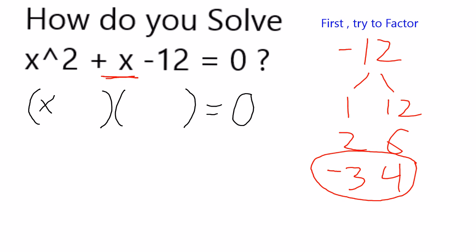Using these factors, I can rewrite as a product of binomials. x minus 3 times x plus 4 equals 0. And if you wanted to, you could FOIL and you would get right back to the original. So these things are equivalent.